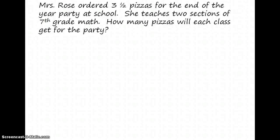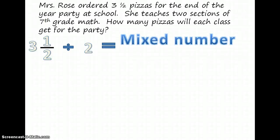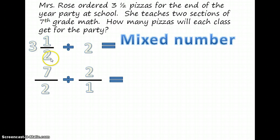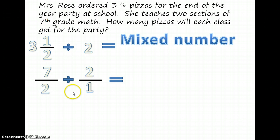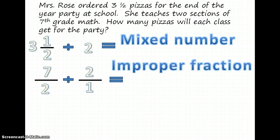We can also solve this problem numerically. It can be written as three and a half divided by two, or three and a half pizzas divided by two sections. This is a mixed number, and in order to solve this we need to find an improper fraction. So to do that, we multiply three times two which is six, plus one which is seven, and keep the denominator the same. So we have seven divided by two, divided by two over one — and two over one is the same as two. This is an improper fraction.